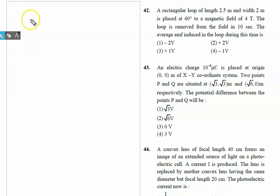A rectangular loop of length 2.5 meters and width 2 meters is placed at 60 degrees to the magnetic field. Here's the loop, and this is the magnetic field, and this angle is given by 60 degrees.